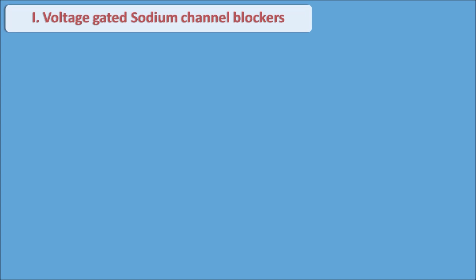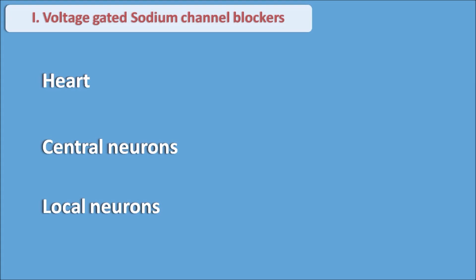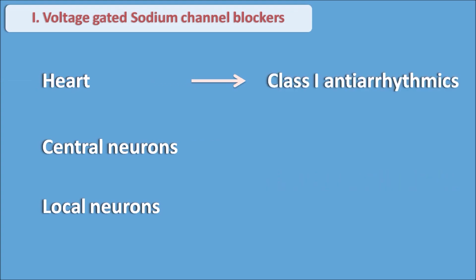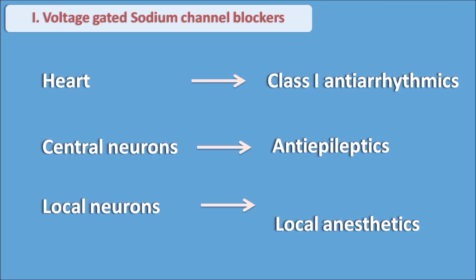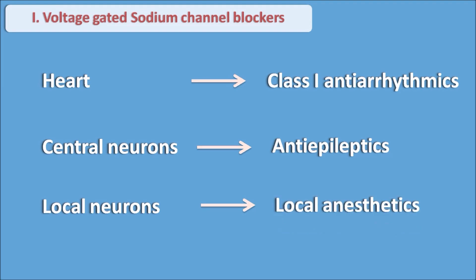Let us start with voltage-gated sodium channel blockers. These channels are present in three important locations: the heart, central neurons, and local neurons. Voltage-gated sodium channels are always responsible for excitation in these three locations. Drugs acting on the heart are mainly Class 1 anti-arrhythmic agents, on central neurons are anti-epileptic drugs, and on local neurons are local anesthetics.